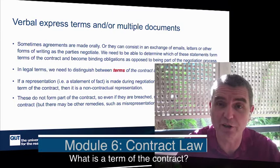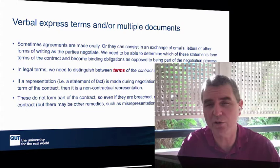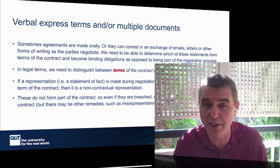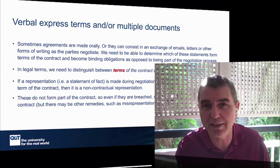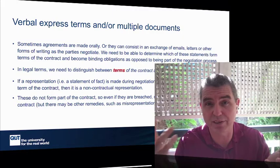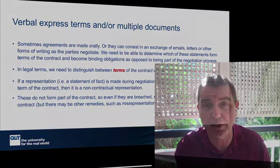One of the things stressed in this module is that contracts don't need to be in writing — they can be verbal or implied by conduct, for instance. So then the question becomes: how do I know what's in the contract if it's not that signed written agreement that the parol evidence rule covers? To understand that, we need to understand how we differentiate a term of a contract from a statement or representation made as part of the negotiation or deal-making process.